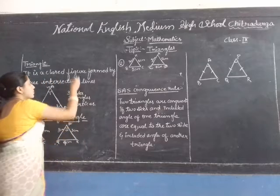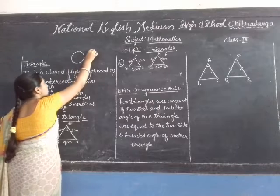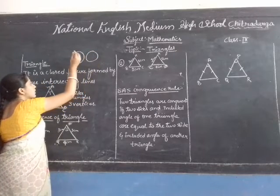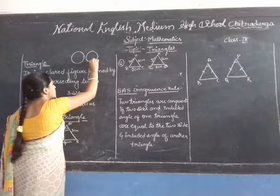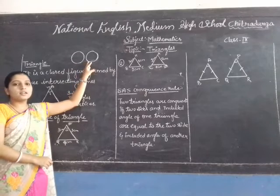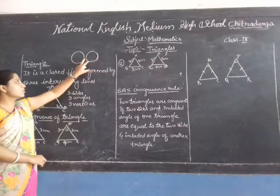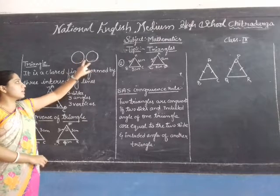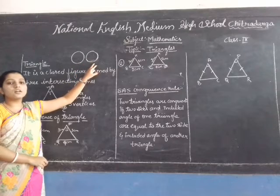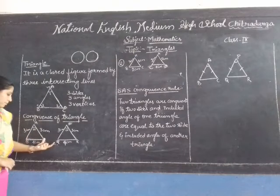Let's take another example — two circles. These two circles are congruent. They are a closed figure, they consist of the same shape, and they also have the same size. So we can say that these two circles are congruent to one another.